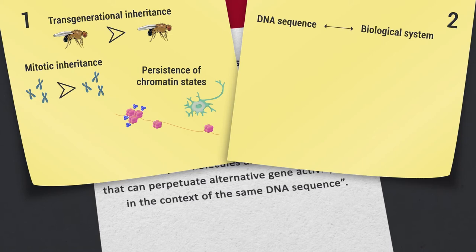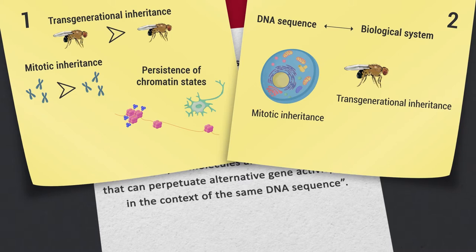Secondly, the DNA sequence to be considered depends on the biological system. In mitotic inheritance, one should analyze the genomic sequence of individual cells, whereas in transgenerational inheritance, one should analyze the DNA of the whole organism as well as of its microbiota if it can contribute to inheritance.